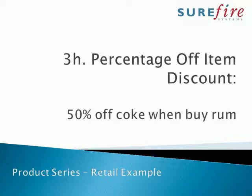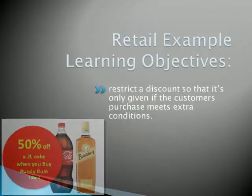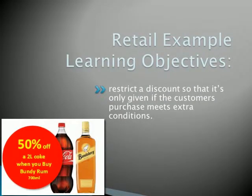Welcome to this retail example for using Discount Wizard. In this advanced example, we'll look at a discount that has criterion: 50% off a two-litre bottle of Coke when you buy a bottle of rum.